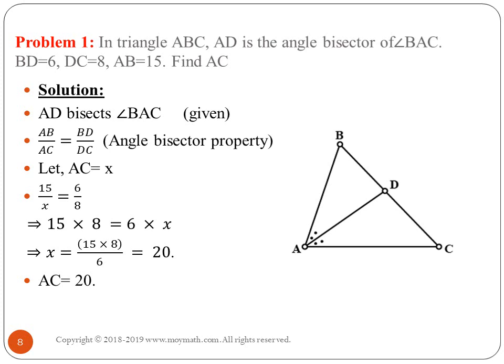Let AC = x. Substituting: 15/x = 6/8. Cross-multiplying gives 15 × 8 = x × 6, so x = (15 × 8)/6 = 20. Therefore AC = 20. If the unit is centimeters, the answer is 20 cm; if meters, 20 m — depending on the units given in the problem.